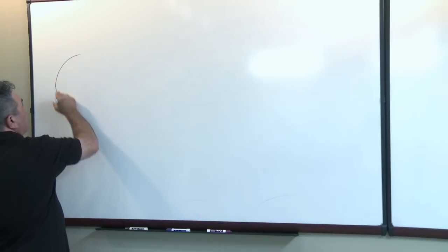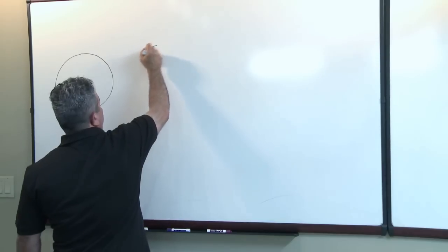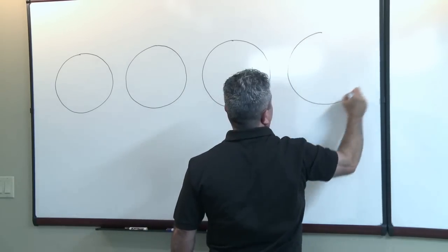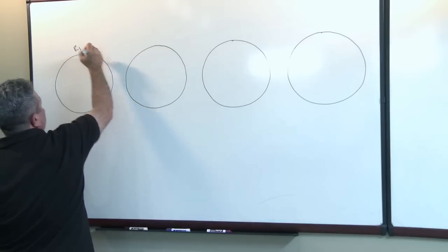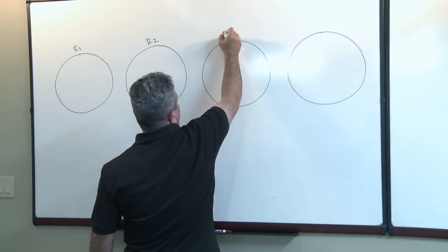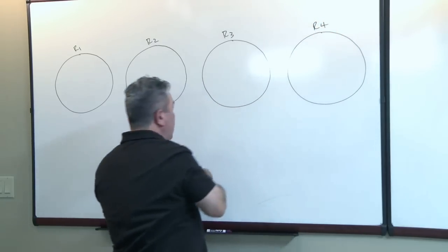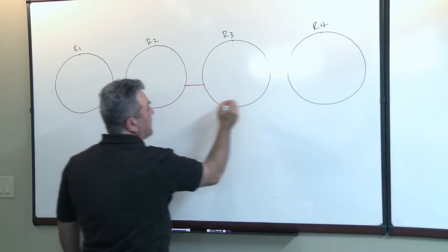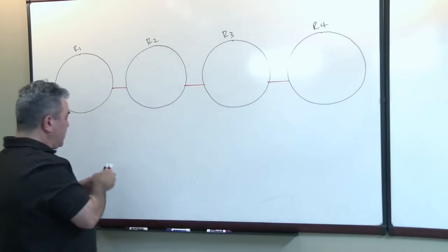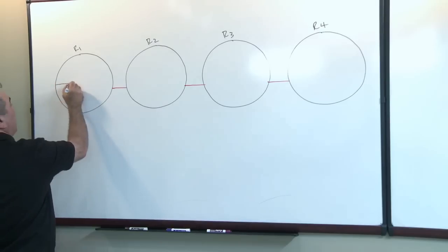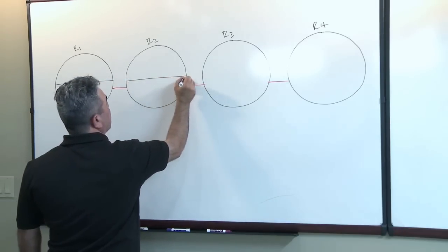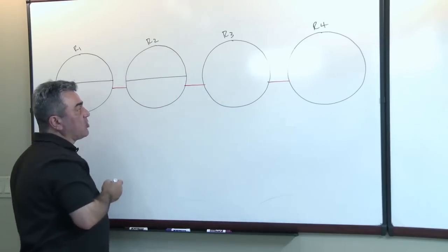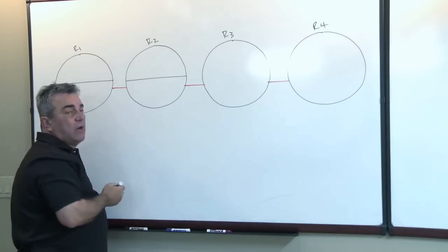So let's say we have 4 routers here — R1, R2, R3, and R4 — and these routers are connected to each other via Ethernet. I'm going to draw a line in the middle of these routers to identify what happens in the control plane and what happens in the data plane. Anything above this line will identify the control plane, and anything below this line will identify the data plane.